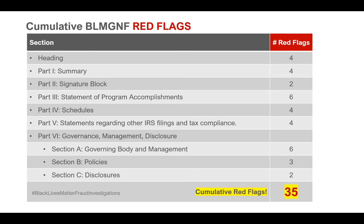35 red flags, and we're only on page six. I'm going to compile all of this information into an Excel spreadsheet, include links to the supporting information, and send it to the IRS. How can an organization get away with 35 red flags? I'm not a forensic investigator or forensic accountant — I don't have the skills IRS accountants have. But being a novice with 20 years of nonprofit sector experience, I can identify 35 red flags. If I can see this, clearly they can too.